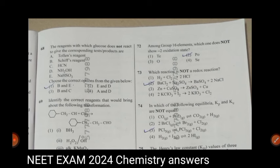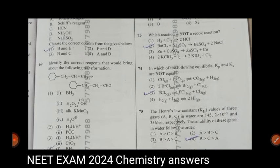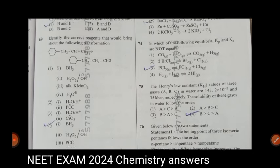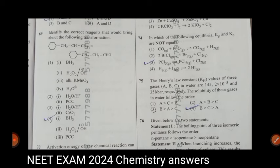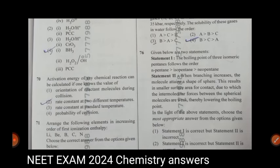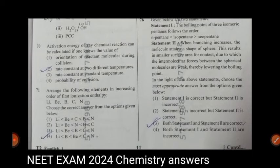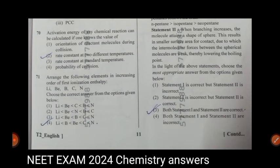Question 68, the reagents with which glucose does not react to give the corresponding test produced products are? Answer 1, B and E. Question 69, identify the correct reagents that would bring about the following transformation. Answer is fourth one. Activation energy of any chemical reaction can be calculated if one knows the value of? Answer is second, rate constant at two different temperatures. Question 71, arrange the following elements in increasing order of first ionization enthalpy. Answer is fourth.